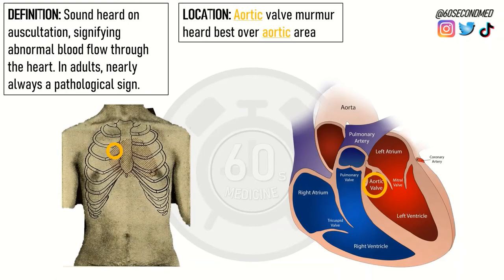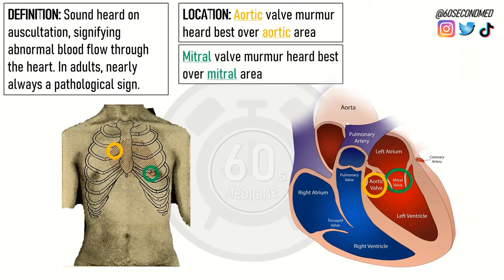When you think about the location, an aortic valve murmur will be heard best over the aortic area as signified in the diagram, and a mitral valve murmur will also be heard best over the mitral area as again signified by the diagram.